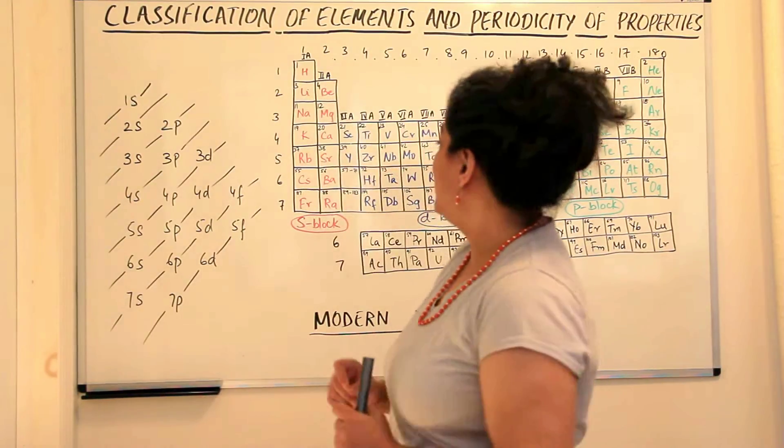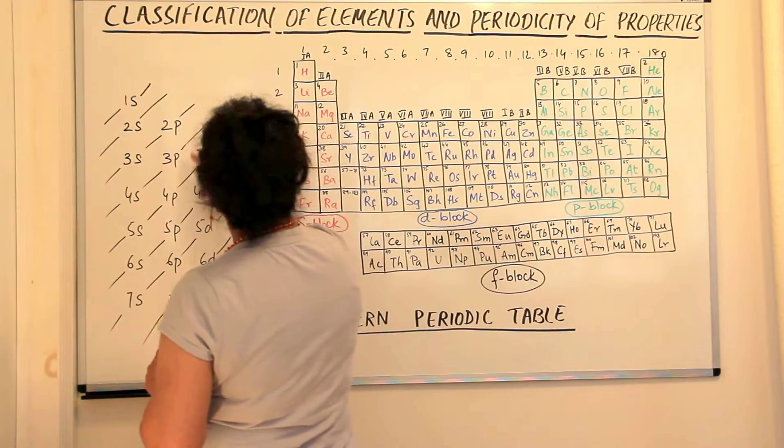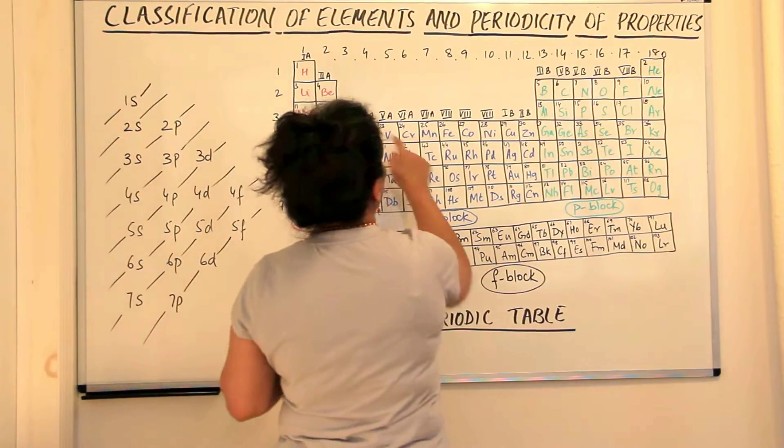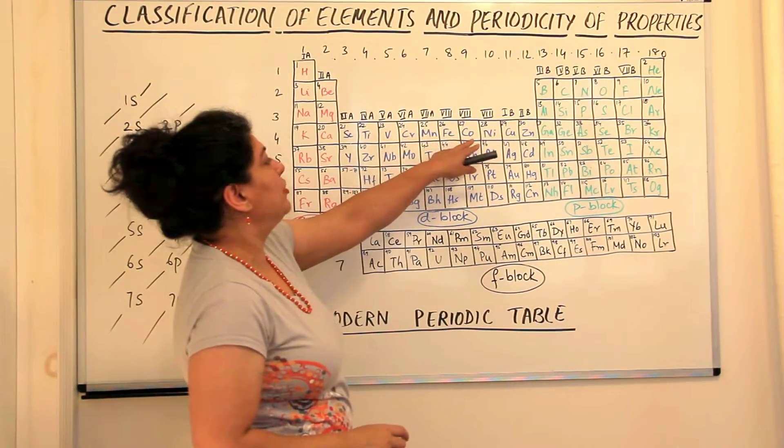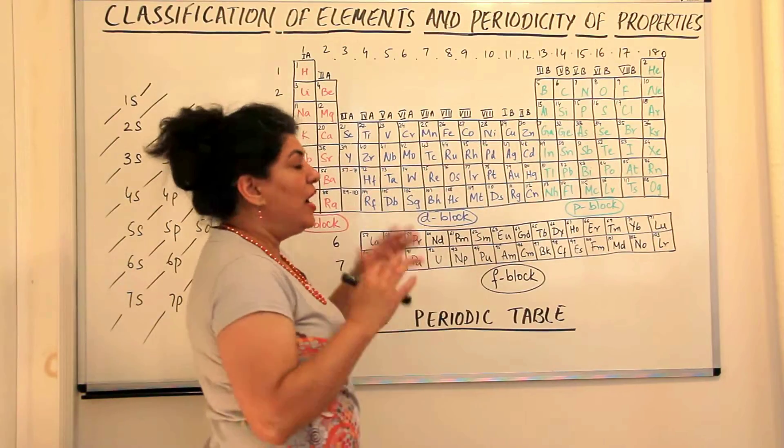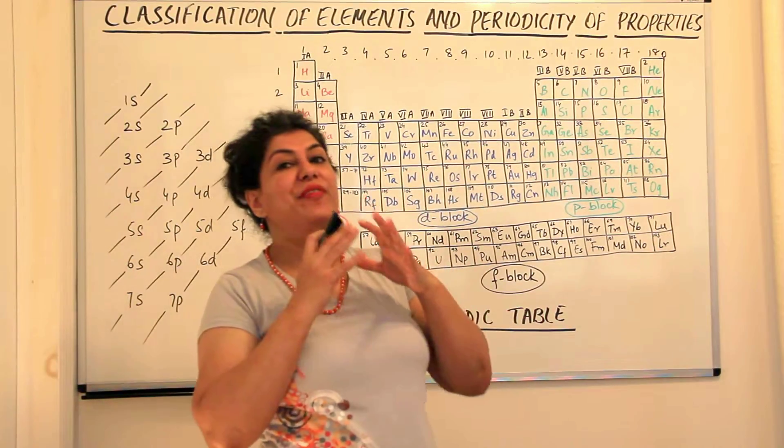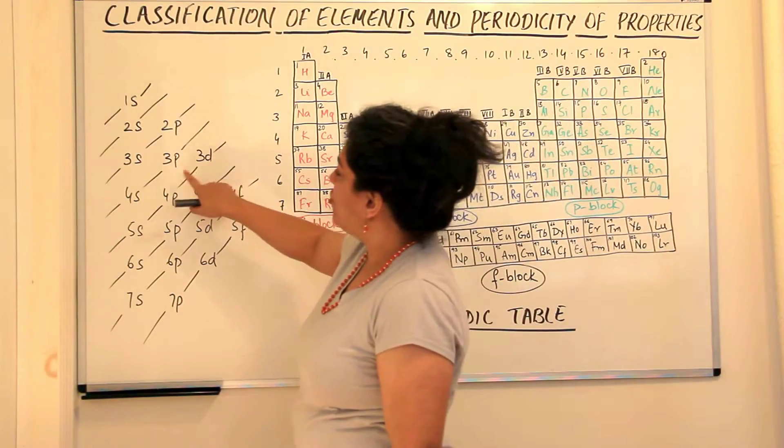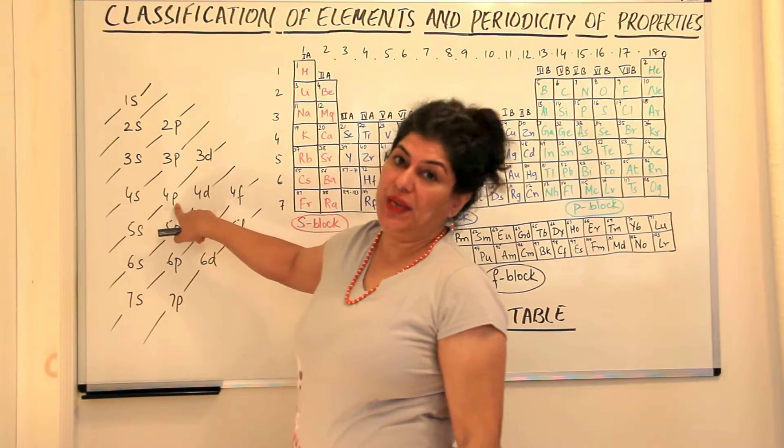Moving ahead, I just explained in the previous video that when the 3d orbitals fill up in scandium, titanium, vanadium, chromium, manganese, iron, cobalt, nickel, copper and zinc, after the 10 electrons have filled up the 3d orbitals, the next electron moves on to the 4p orbital.